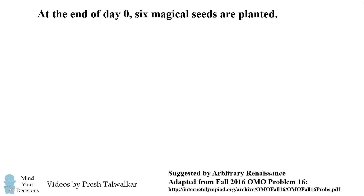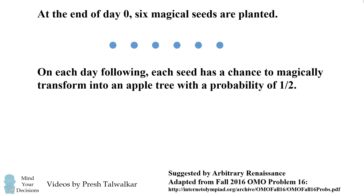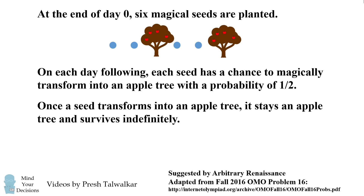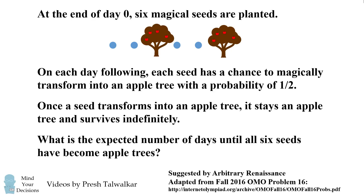At the end of day 0, six magical seeds are planted. On each day following, each seed has a chance to magically transform into an apple tree with a probability of one-half. Once a seed transforms into an apple tree, it stays an apple tree and survives indefinitely. What is the expected number of days until all six seeds have become apple trees?